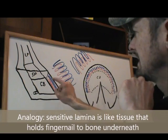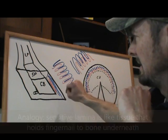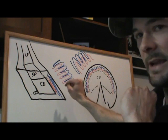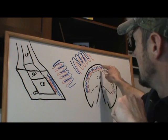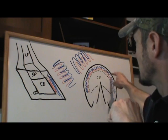Sensitive lamina holds the insensitive lamina, the external hoof wall to the horse and is responsible for bearing about 90% of the horse's weight.